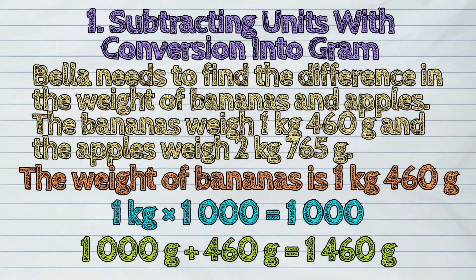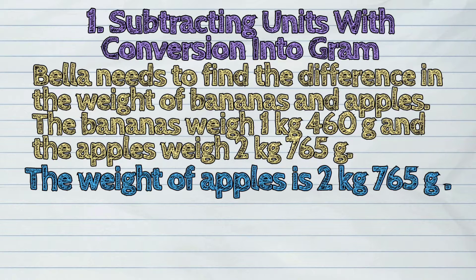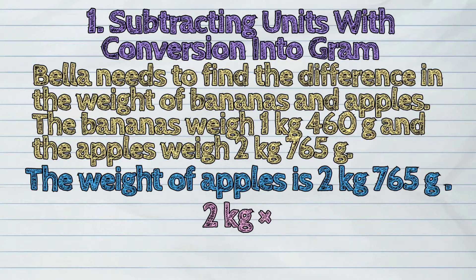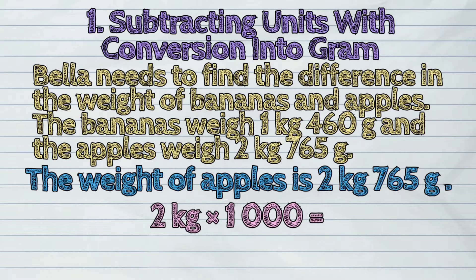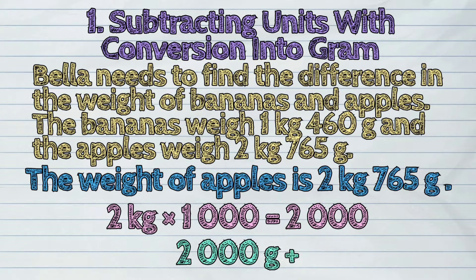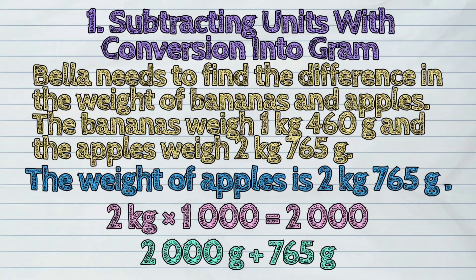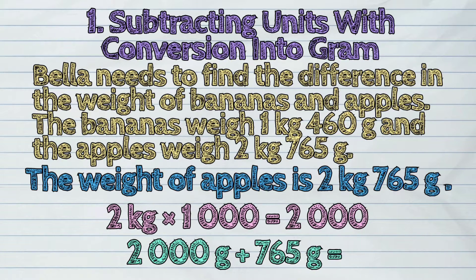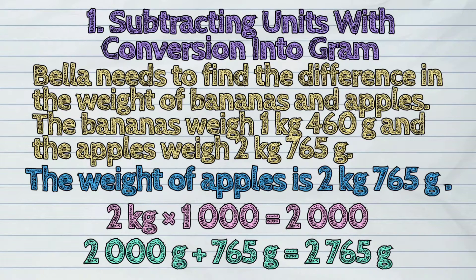Next, the weight of apples: 2 kilograms 765 grams. 2 kilograms times 1,000 is 2,000. Then we add 765 grams to our answer: 2,000 plus 765 grams is 2,765 grams.